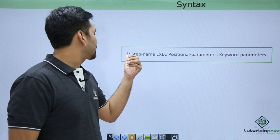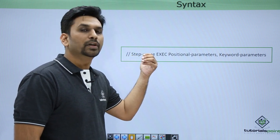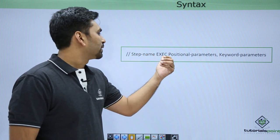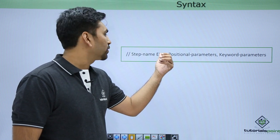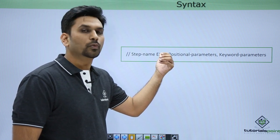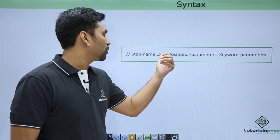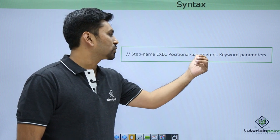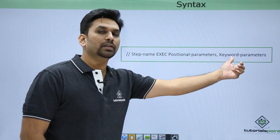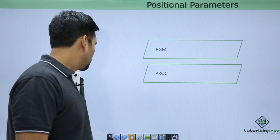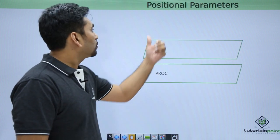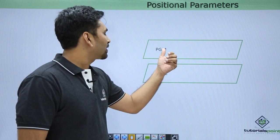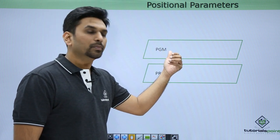This is the syntax: first are the identifiers, then you need to mention any name of up to eight characters, then the keyword EXEC — just as we had JOB for the job statement, here we write EXEC. Then we have positional parameters and keyword parameters. There are two positional parameters: one is PGM, which is program, and the other is procedure.